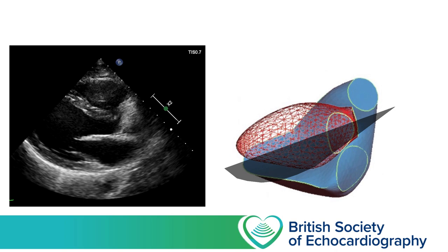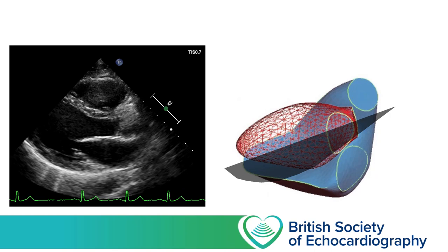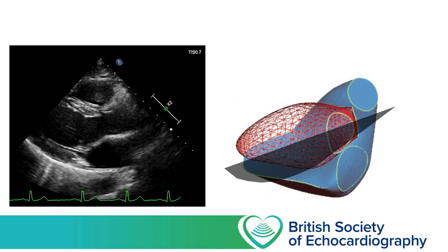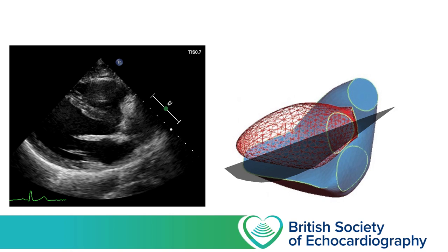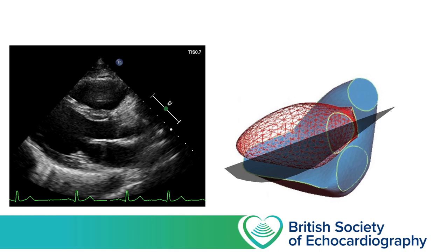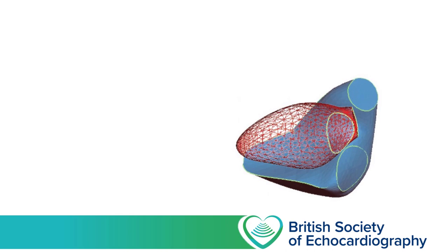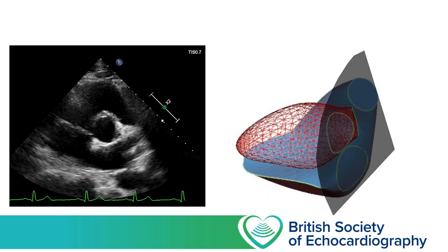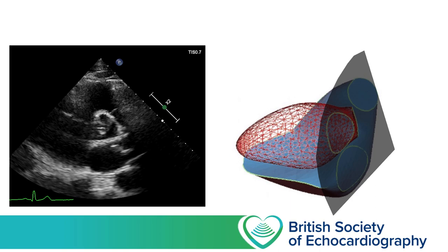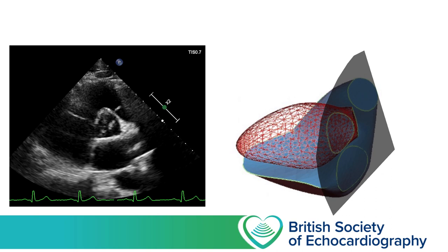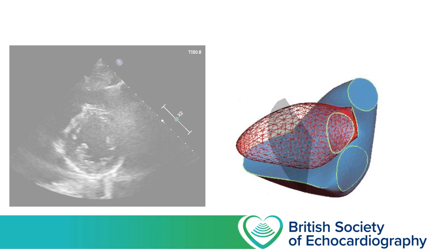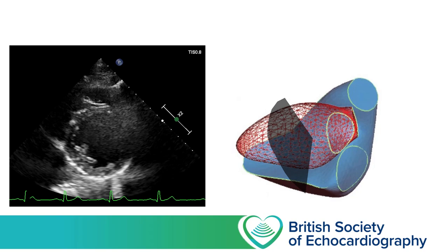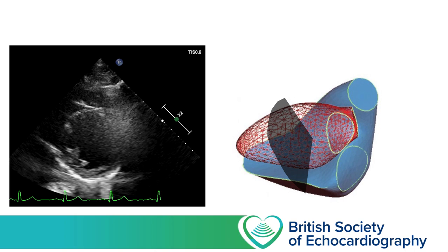Traditionally our first view is the parasternal long axis, where we're just catching a small amount of right ventricular outflow tract just inferior to the pulmonary valve — the vast majority of the RV cavity lies inferior to our imaging plane. Nevertheless, when there's severe RV dilatation, we'll likely get some clues here with dilatation of the RV outflow tract and displacement of the intraventricular septum from right to left. Moving to the parasternal short axis views, starting at the level of the great vessels we can see the most medial portion of the RV cavity from the tricuspid valve to the RVOT and pulmonary valve, but the majority of the RV cavity lies lateral to our imaging sector. One benefit of the parasternal short axis views is that they nicely show the intraventricular septum, and if RV disease is causing septal displacement, this can be easily appreciated.